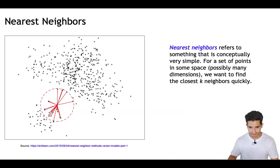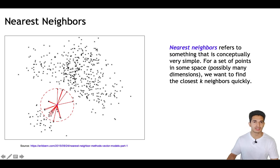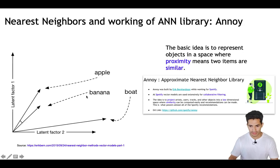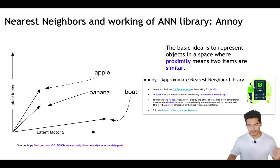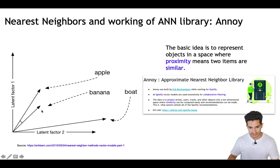Nearest neighbor is a conceptually very simple thing: for a given point we have to find the k closest data points. Why do we do nearest neighbor search? Because whenever we are able to represent some entity in terms of a vector, we see that entities which are close to each other come close in the vector space as well. We can see apple and banana close, and far from the boat — so proximity in the vector space means similarity.